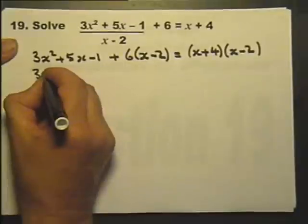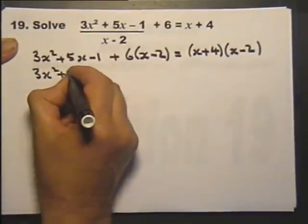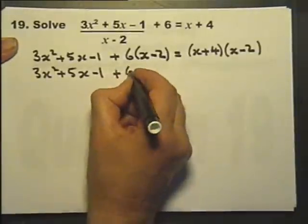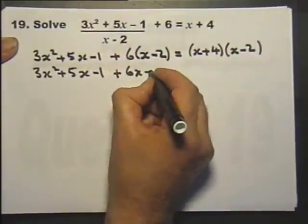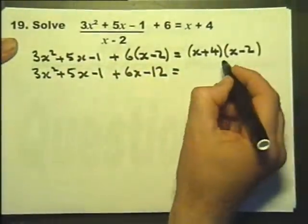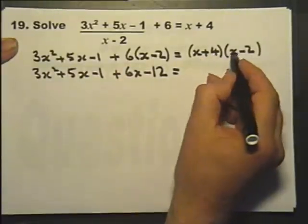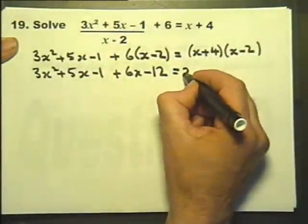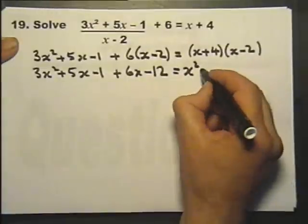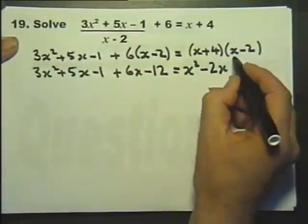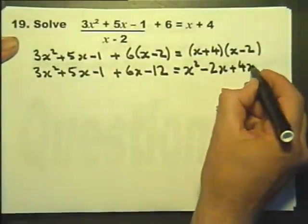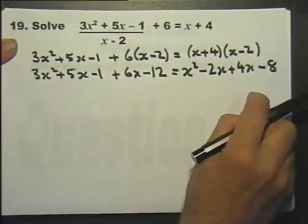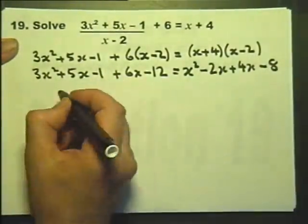Now we'll get rid of those brackets by expanding them. 6 times x, 6 times minus 2. Multiplying both these terms by both those terms: x times x, and x times minus 2, 4 times x, and 4 times minus 2. Now you could do this very quickly or very carefully.